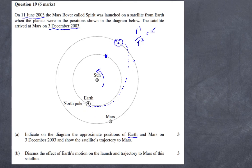The second part of the question says discuss the effect of earth's motion on the launch and the trajectory to Mars of this satellite. In order to get three marks you need to do a number of things. First of all, you're obviously going to launch it in the direction that the earth is going. That automatically means you've got a speed boost. So number one, you've got a speed boost simply because you're launching it from the same direction that the earth is moving around the sun.